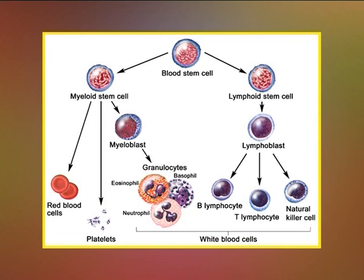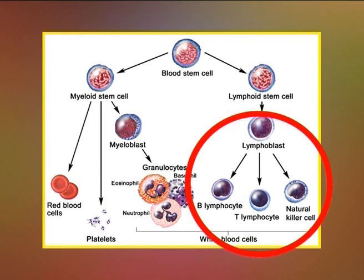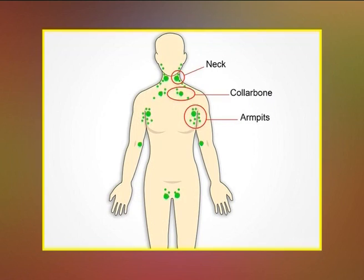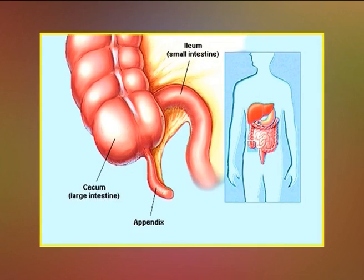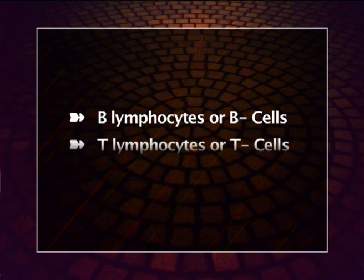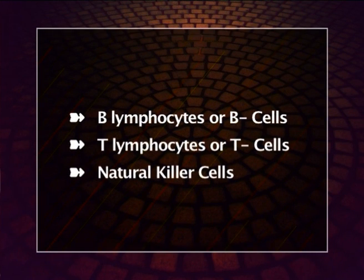Lymphocytes are mononuclear leukocytes constituting 20–40% of WBCs. They occur in large numbers in the blood, lymph, and lymphoid organs such as thymus, lymph nodes, spleen, and appendix. Lymphocytes are mainly of three types: B lymphocytes or B cells, T lymphocytes or T cells, and natural killer cells.